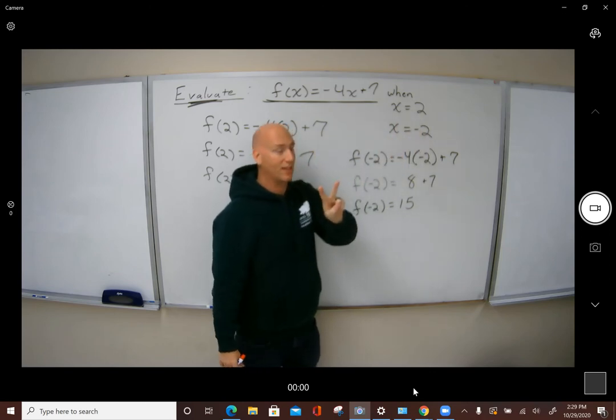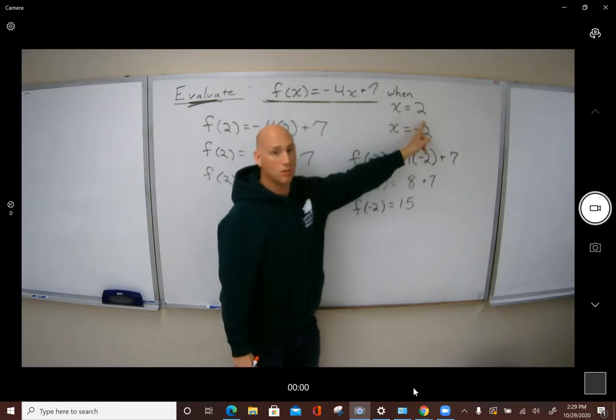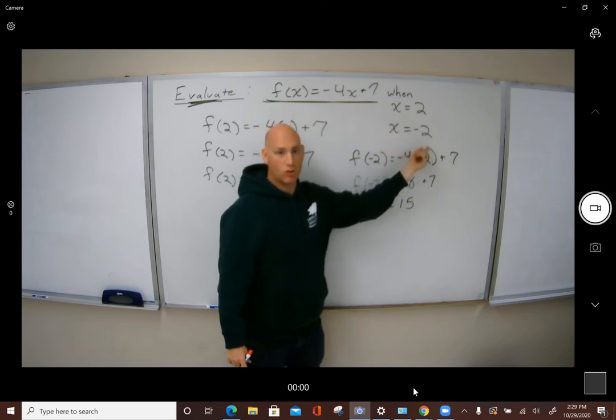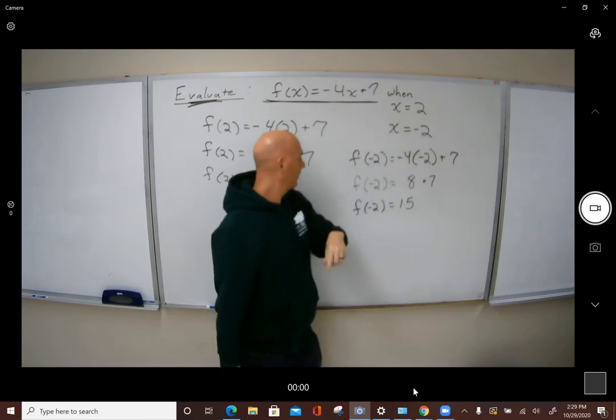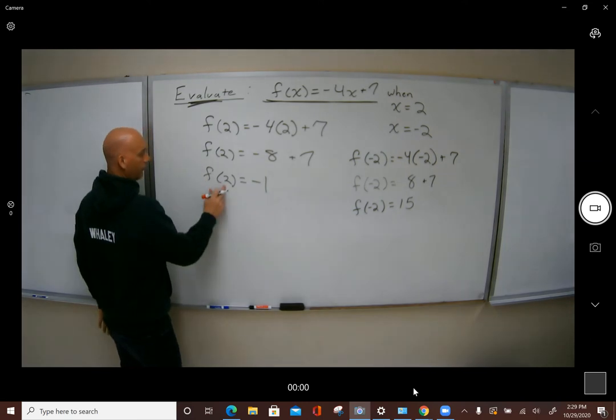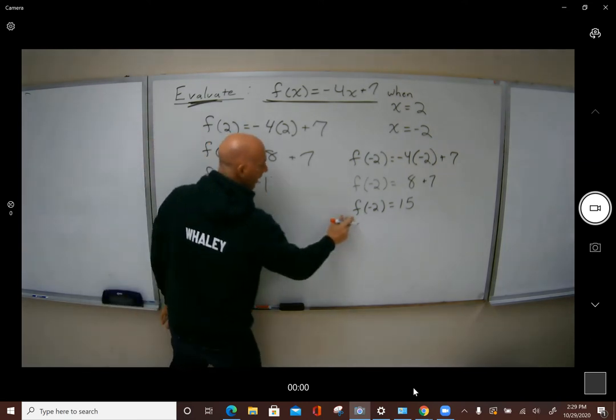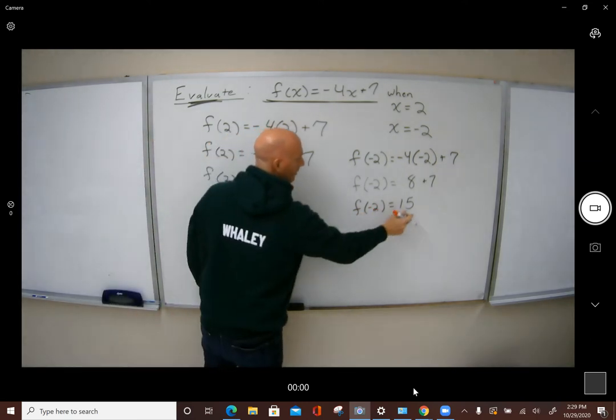These are the specific values we want to know. So we want to know two specific instances: when x is 2, what is f of x? When x is negative 2, what is f of x? F of 2 is negative 1. F of negative 2 is 15.